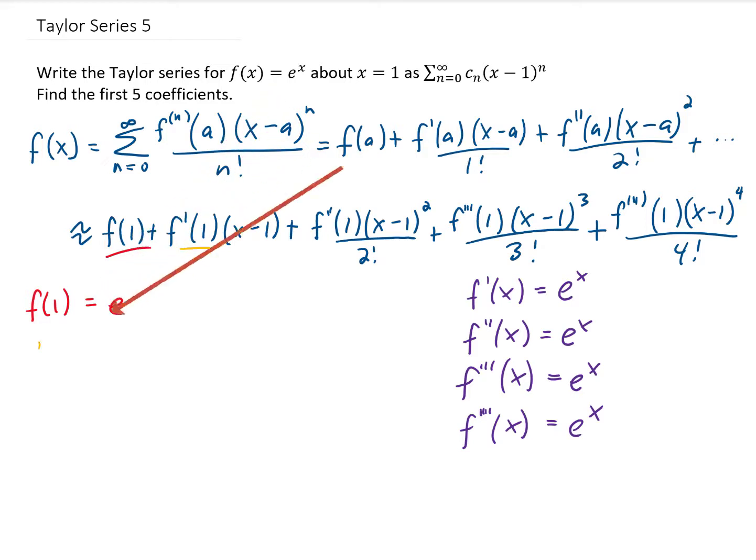If we want f prime of 1, that is going to be our f prime function evaluated at x equals 1, which again is just e. And you'll notice that all of our function values are just going to be e.